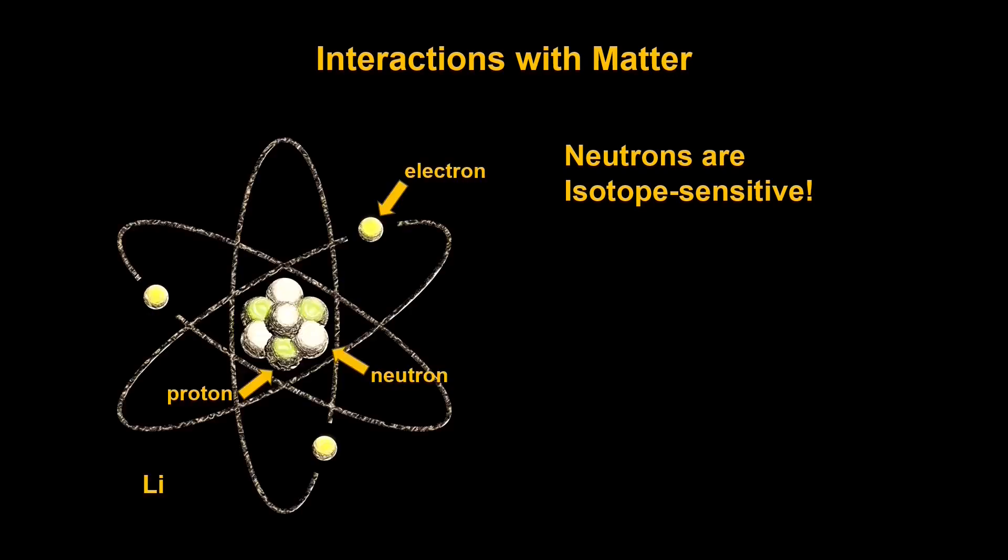Another cool property about neutrons is that they are isotope sensitive. This means that the attenuation of the neutron also depends on the isotope. And to give you a refresher on isotopes, if we go back to the lithium atom that we showed before, this is actually a lithium-7 atom because we can see four neutrons. So that would be lithium-7. If we were to take away one of these neutrons, we'd be left with lithium-6. The same element, but two different isotopes.